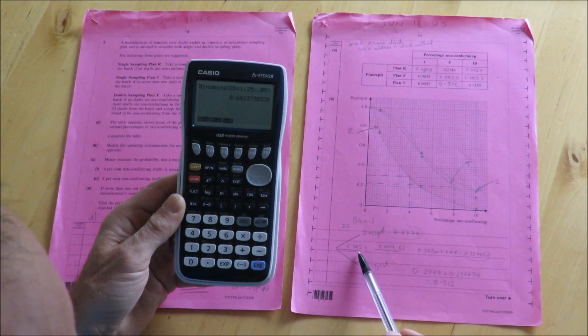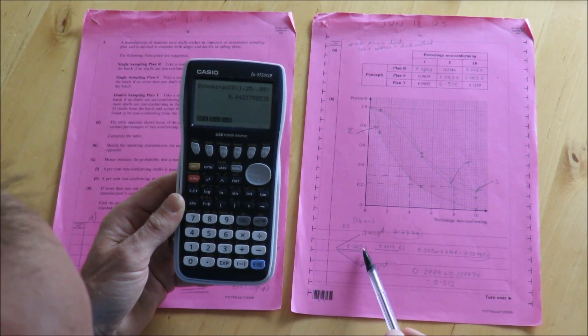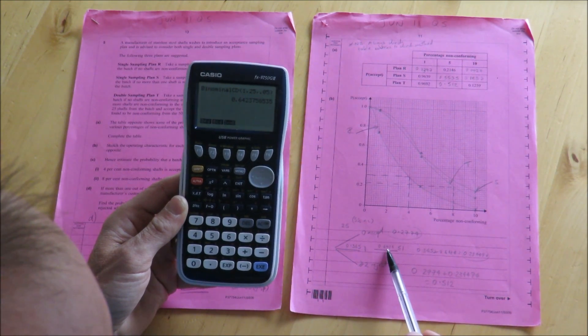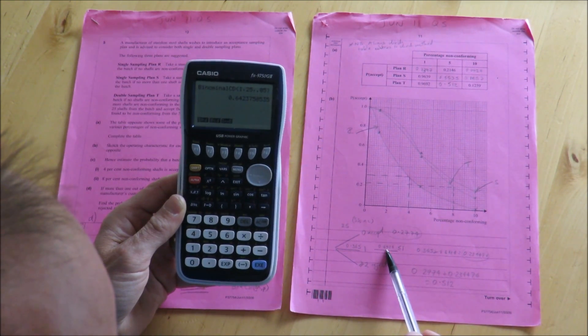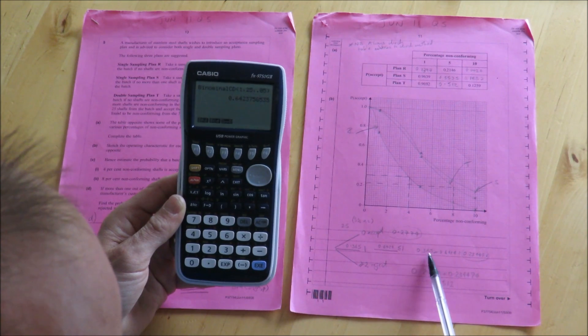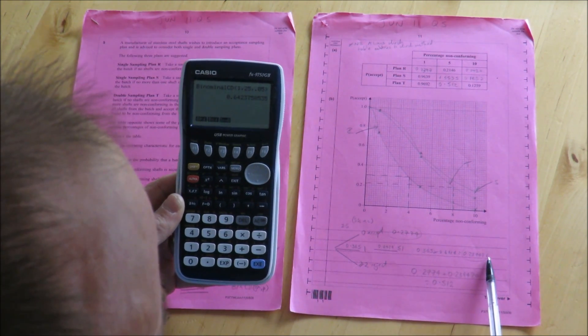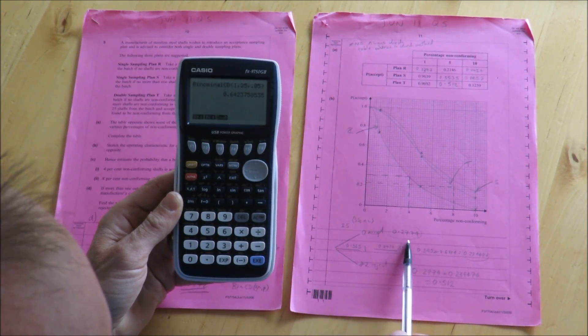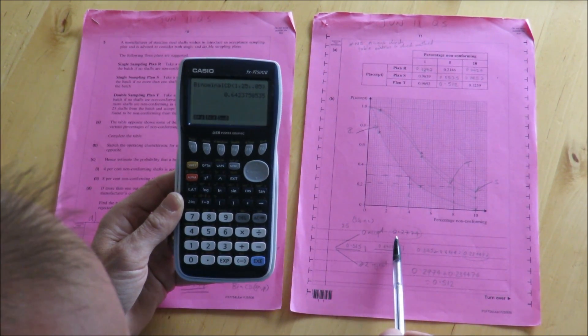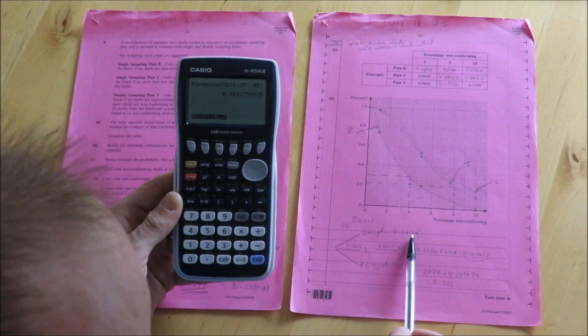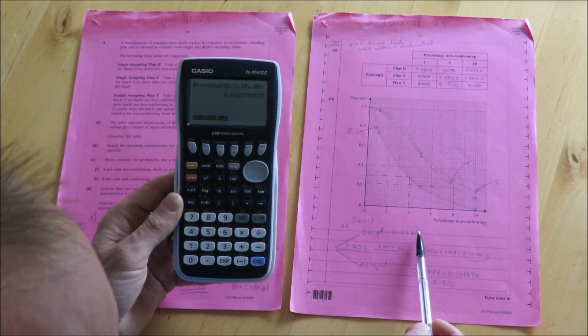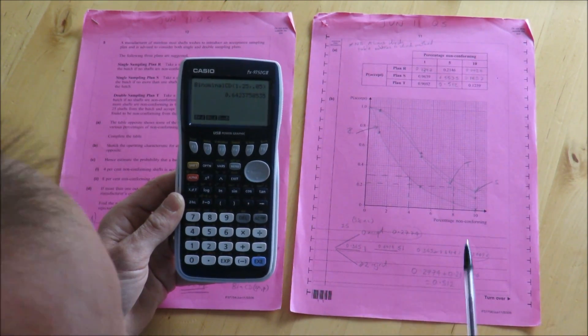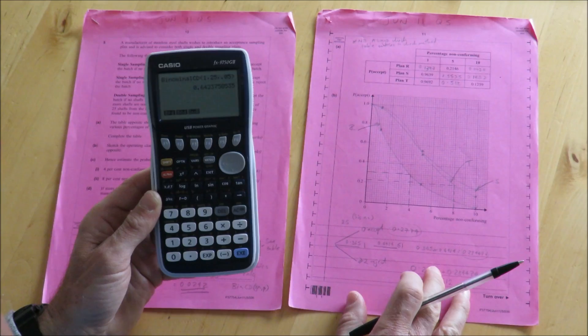What I'm then going to do, just like a tree diagram, is I'm going to multiply along here, because it's the chance of getting 1 item from the first sample, and then 1 or fewer from the second sample, and that gives me, when I multiply along the branches, 0.23447. I'm going to add that value to the outright chance of acceptance from the first sample, which was 0.2774. I believe I pronounced that as 9 before, but that's a 4. Now if I add those together, 0.512 appears in the table, and that's what I get.